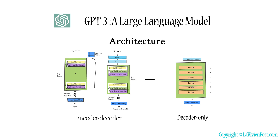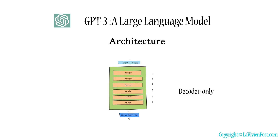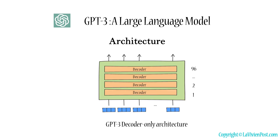In general, the existing large language models can be categorized into encoder-decoder architecture and decoder-only architecture. Since most language tasks can be cast as predicting the next word based on the input, the decoder-only architecture is potentially advantageous to implicitly learn how to accomplish the tasks in a unified way. GPT-3, the same as GPT-2, uses a causal decoder architecture.